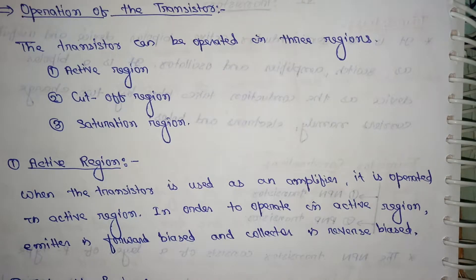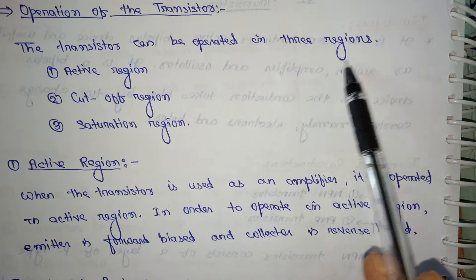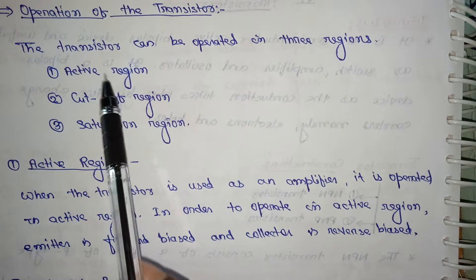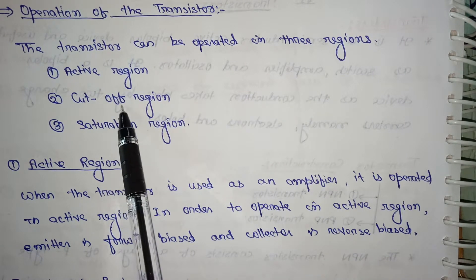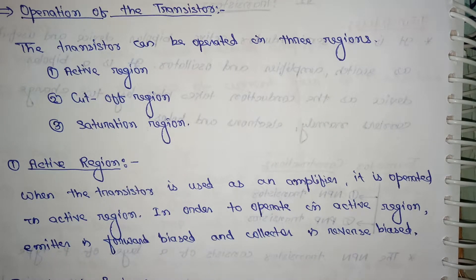Next, we will see the topic called the operation of the transistor. The transistor can be operated in three regions: first, the active region; second, the cutoff region; and third, the saturation region.